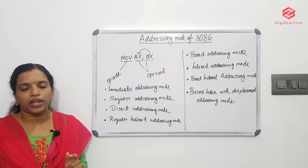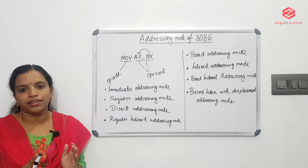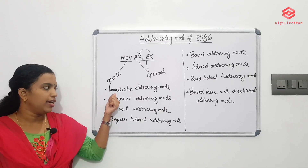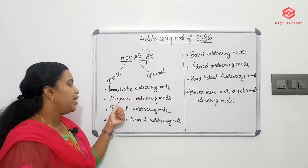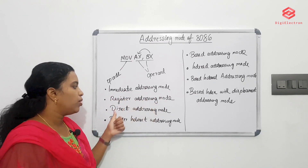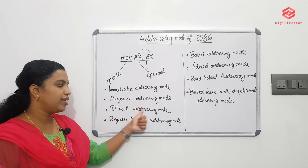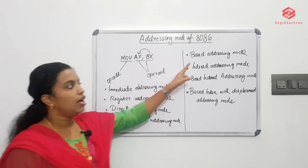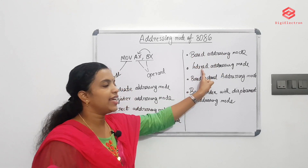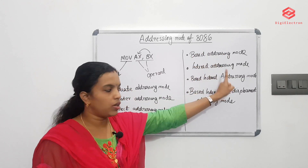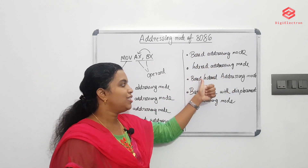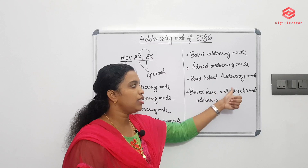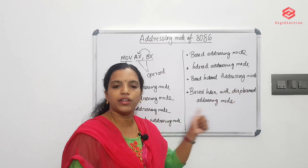8086 microprocessor has 8 addressing modes: immediate addressing mode, register addressing mode, direct addressing mode, register indirect addressing mode, based addressing mode, based index addressing mode, and based index with displacement addressing mode.